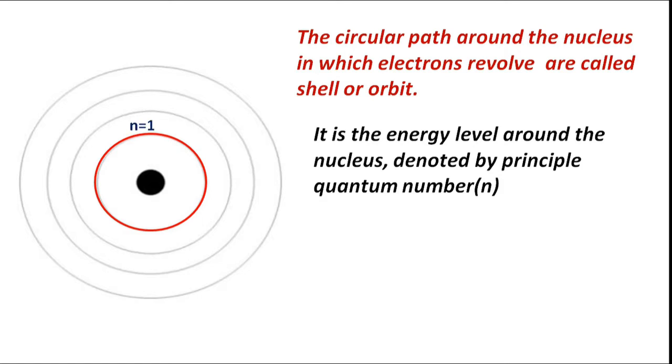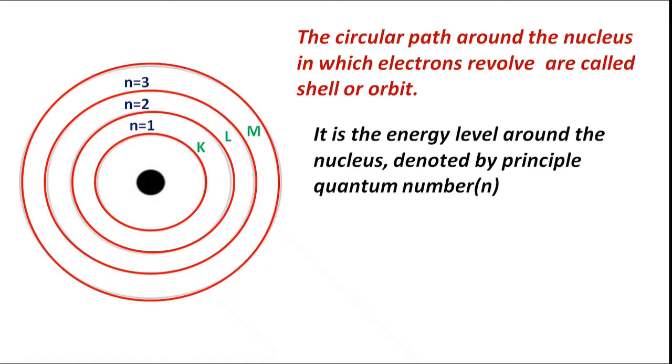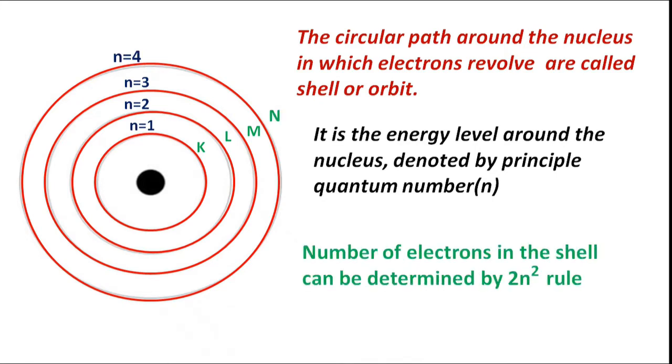If N equals 1, it is K shell. If N equals 2, it is L shell. If N equals 3, it is M shell. If N equals 4, it is N shell. Number of electrons in the shell can be determined by 2N² rule.